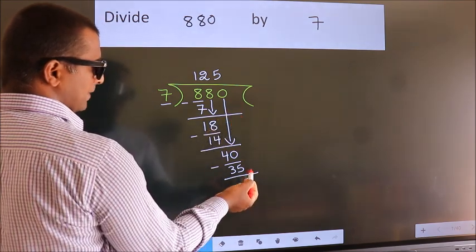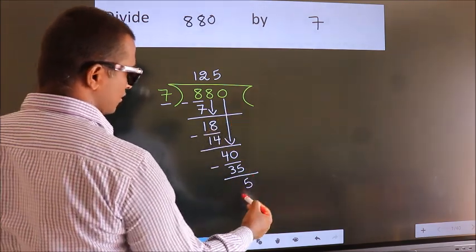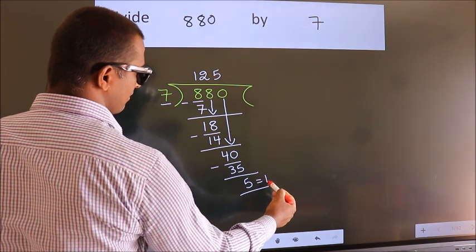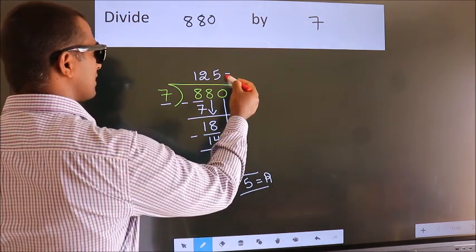No more numbers to bring down. So we stop here. This is our remainder. This is our quotient.